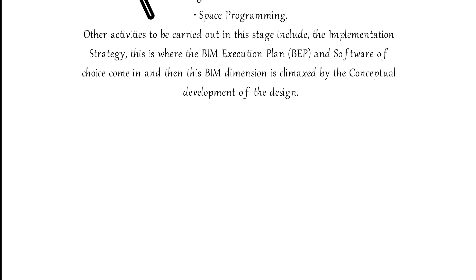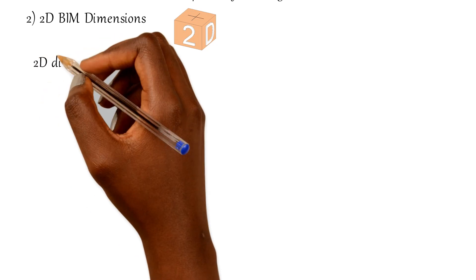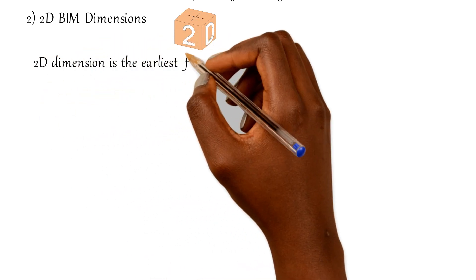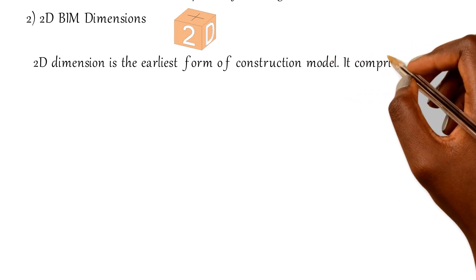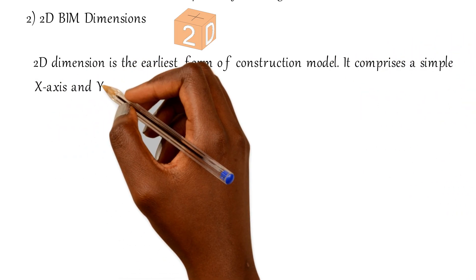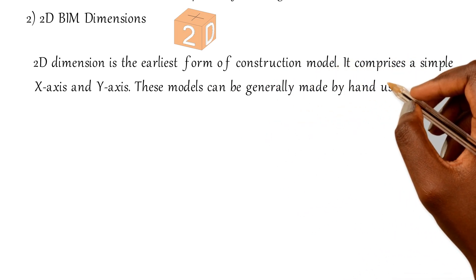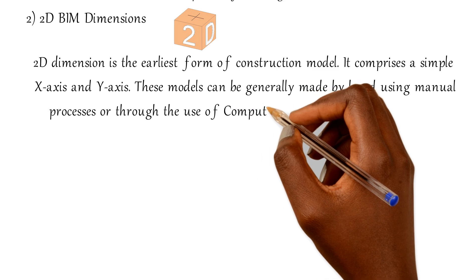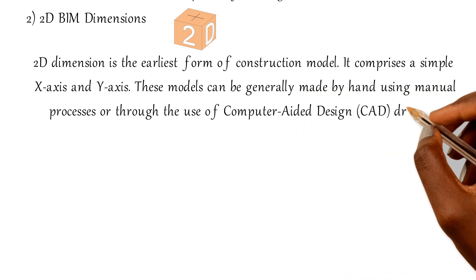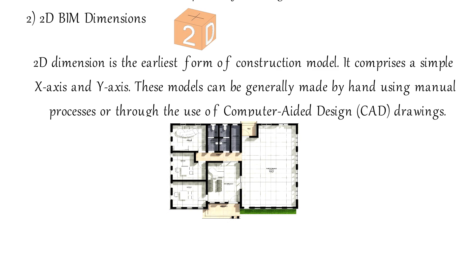Number two: 2D BIM dimensions. 2D BIM is the earliest form of construction model. It comprises a simple x-axis and y-axis. These models can be generally made by hand using manual processes or through the use of computer-aided design drawings. At this stage, design development is carried out and the output is mainly 2D drawings of plans and sections.